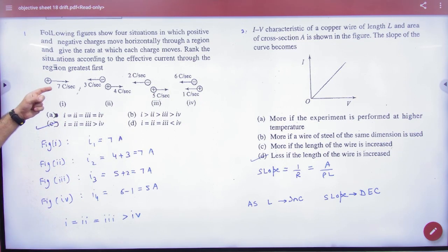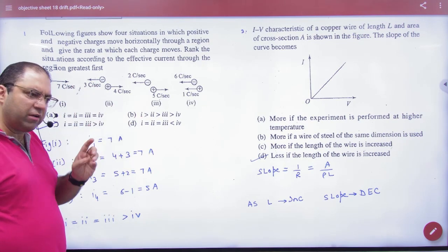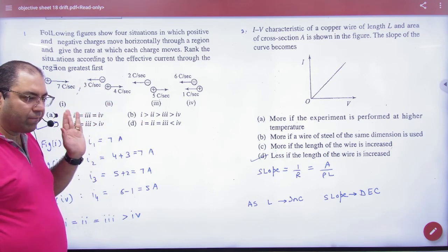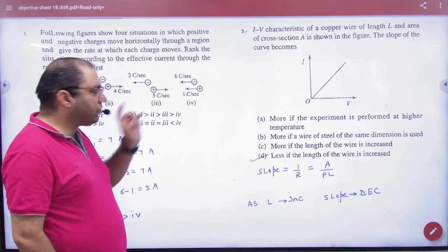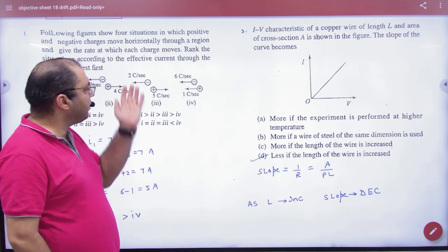So if you see the first figure, charge upon time is current, 7A current. Negative left, positive right, conductor is like this. So both current add, 7A current is done. Negative left, positive right, this is like this. Because positive right and negative left, it is 7A current.